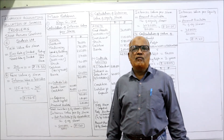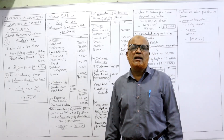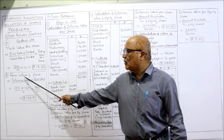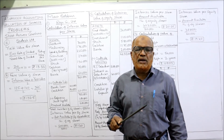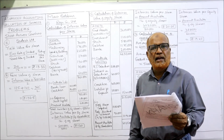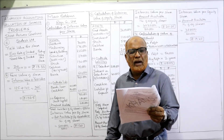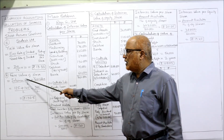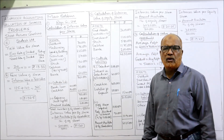Next, the 7th problem — assessing the fair value of the share. Fair value is simply the average of intrinsic value and yield value: (Intrinsic Value + Yield Value) / 2. In the problem, value on the basis of net assets — this is the intrinsic value — is ₹125, and yield value is ₹140. Paid up value of share is ₹100, but we don't require that for calculating fair value. So (125 + 140) / 2 = ₹132.5 is the fair value of the share.